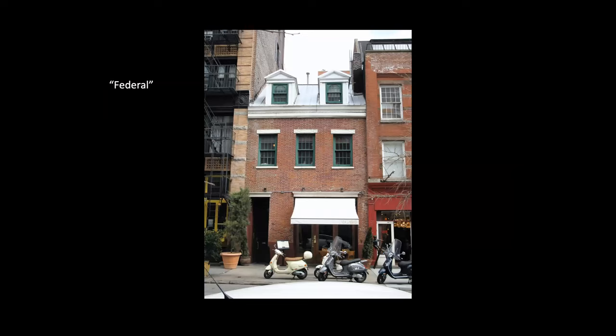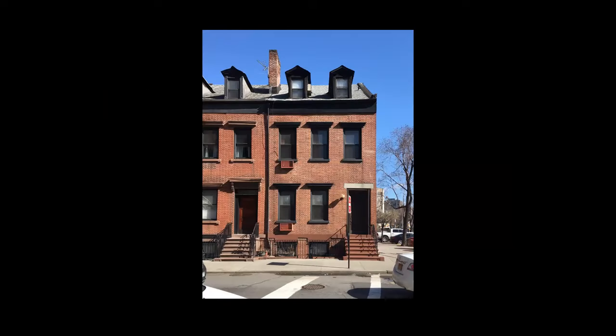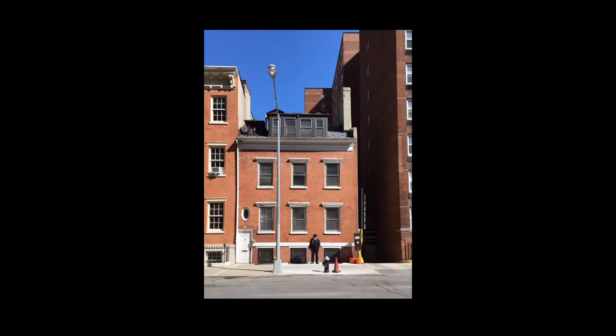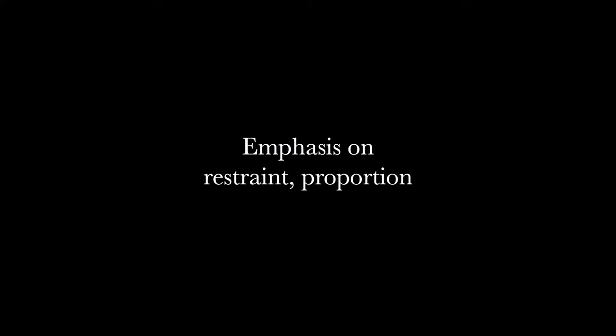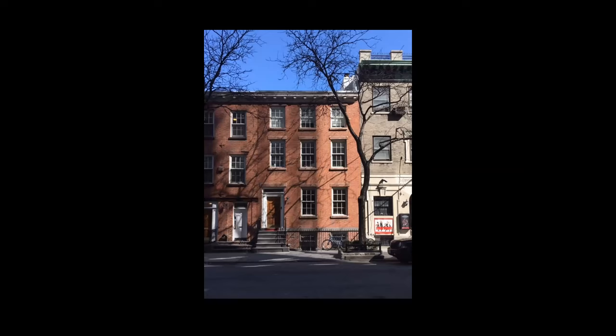Here's one in Manhattan — this is what would later be called federal housing. And this is a whole row of them in West SoHo. There's an emphasis on restraint, proportion, classical details, but not very embellished, not a lot of decoration. They often had pitched roofs, but not always — this one has a flat roof. Sometimes they're two stories, sometimes three.